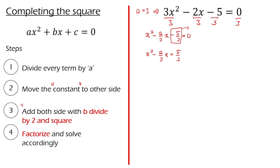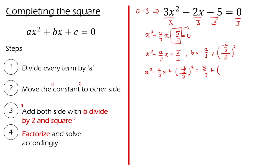Now for step 3: add both sides with (B divided by 2) squared. We identify B, which is negative 2/3. So we compute (negative 2/3 divided by 2) squared and add to both sides: x² − (2/3)x + (negative 2/3 ÷ 2)² = 5/3 + (negative 2/3 ÷ 2)². Simplifying, we get x² − (2/3)x + (negative 1/3)² = 5/3 + (negative 1/3)².